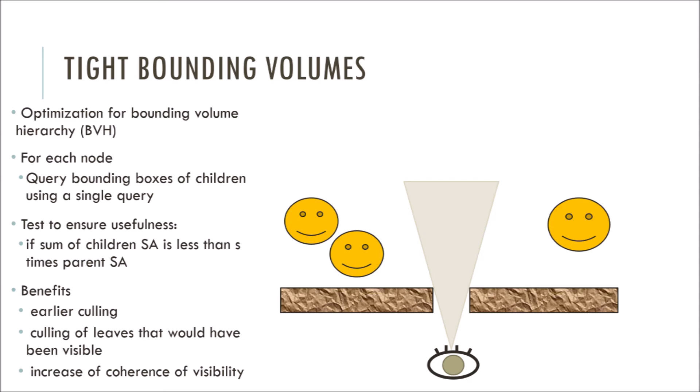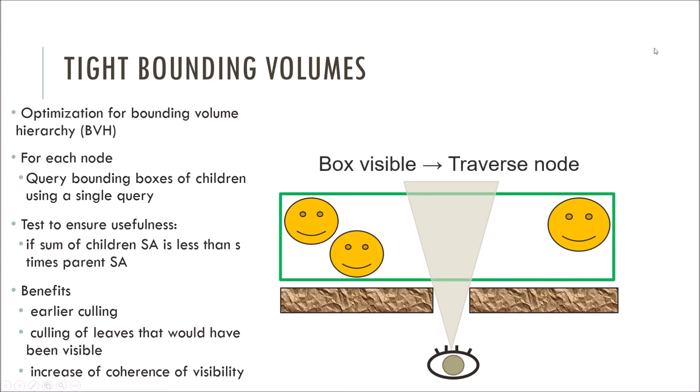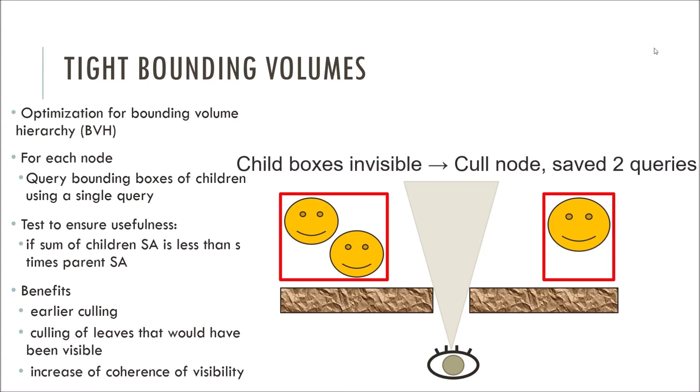Thus, in our search to create a tighter bounding volume, we have to test if the sum of the surface area of the bounding volumes of the children is not larger than S times the surface area of the parent node. As you can see on the right, as we approach an interior node and its bounding volume is visible, we traverse, but then we look at the tight bounding volume, which is a collection of the children's bounding volume, and we quickly realize that nothing is truly visible, thus saving two queries of the children nodes.